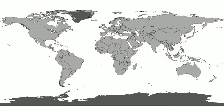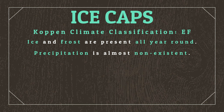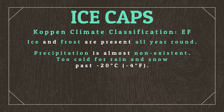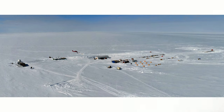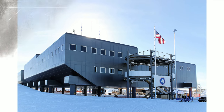On Earth, this refers to areas like Antarctica and inner Greenland, as well as the summits of tall mountains. While many people think of these climates and imagine snow, precipitation here is actually almost non-existent, as once temperatures drop below negative 20 degrees Celsius, it's generally too cold for both rain and snow. These frozen landscapes are considered inhospitable to human life, though while there are no permanent settlements within ice cap climates on Earth, some research stations — such as the Summit Station in Greenland and the Amundsen-Scott Station in Antarctica — can be found here.